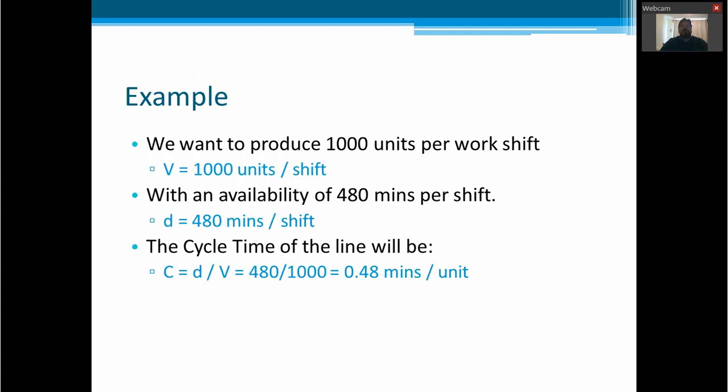For example, if we want to produce 1000 units per work shift, we are going to have a volume of 1000 units with an availability of 480 minutes per shift. The cycle time of the line will be the time divided by the volume, 480 divided by 1000. This is going to be 0.48 minutes per unit. This is the cycle time that we need to have in each workstation. Every 0.48 minutes, we need to pass the work from one workstation to the other.